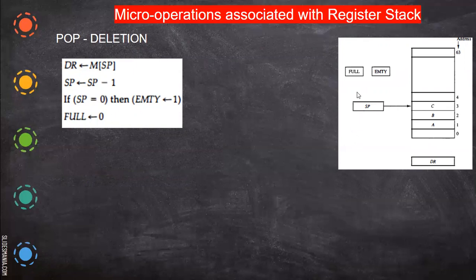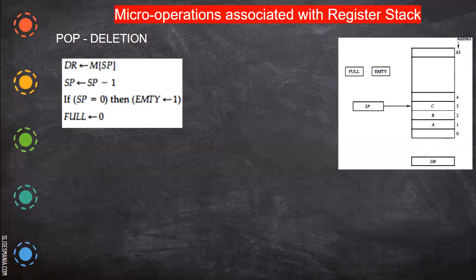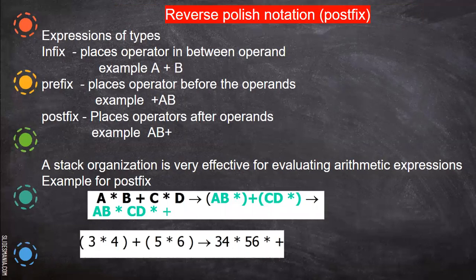For a pop operation, first check the Empty flag. The value at the memory location pointed to by the stack pointer is placed in the data register — DR = M[SP]. Then the stack pointer is decremented. After decrementing, if SP equals 0, set Empty = 1, meaning the stack is now empty. Also set Full = 0, because since the stack is empty you can push more data.